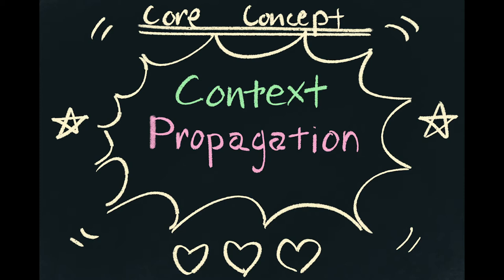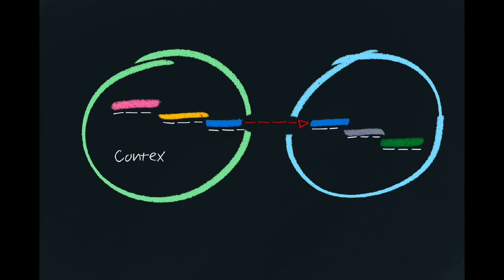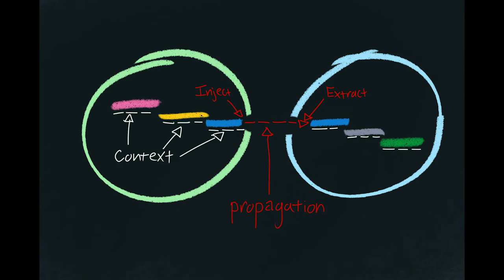How does context propagation work? Imagine we have two servers connected via network request. All of OpenTelemetry's indices and other transactional data is stored in an object called the context. This context object follows the flow of execution through the program. When a transaction moves from one service to the next via a network call, all of these key-value pairs must come along as well. Sending along the contents of the context object as metadata on the network request is called propagation. On the client side, the contents of the context object are injected into the HTTP request as HTTP headers. On the server side, the same values are extracted from the HTTP headers and deserialized into a new context object, which continues to follow the transaction through the new server.